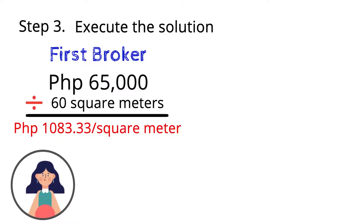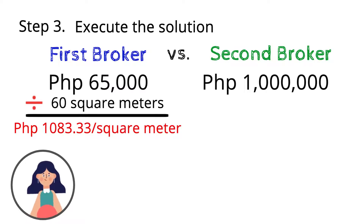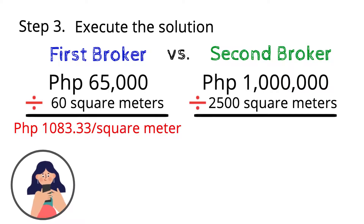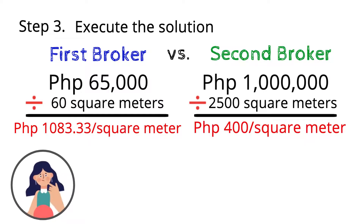On the other hand, the second broker is selling his lot for 1,000,000 pesos over one quarter of a hectare, which is equivalent to 2,500 square meters. Dividing them, the cost of the lot is only 400 pesos per square meter.